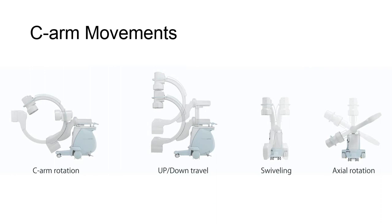We call them C-ARM simply because of their shape. The round, semicircular portion connecting the image intensifier to the X-ray tube keeps the central ray in constant alignment with the image intensifier and allows for a multitude of positioning capabilities.